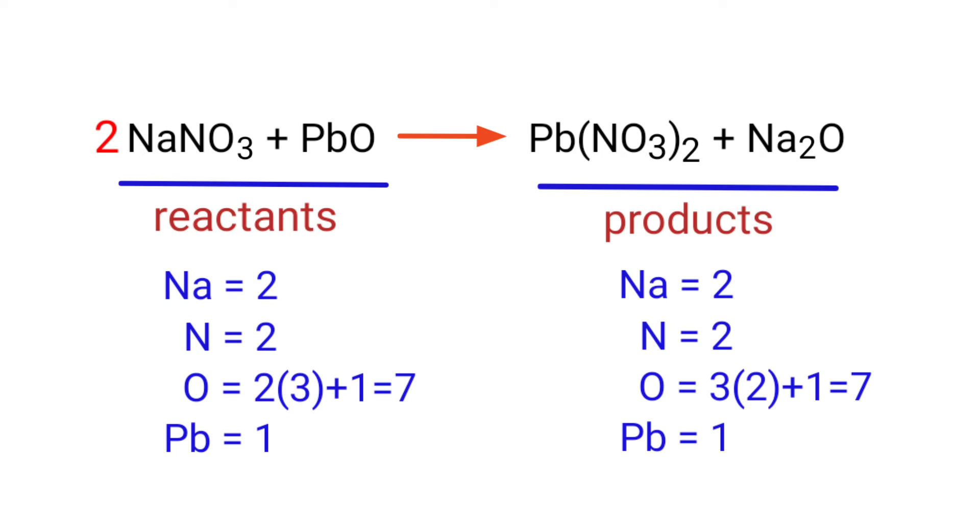The equation is now balanced. There are 2 sodium atoms, 2 nitrogen atoms, 7 oxygen atoms and 1 lead atom on both sides.